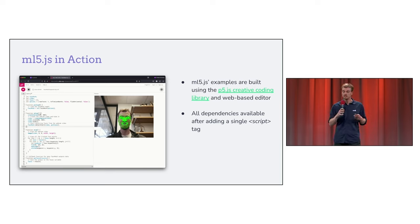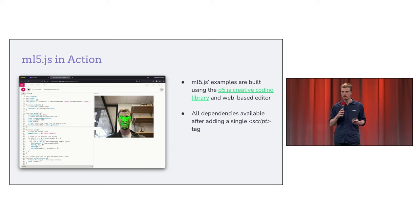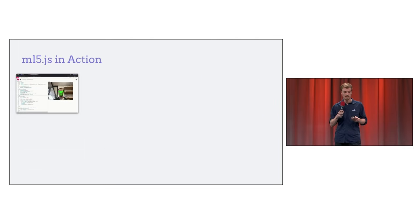ML5's examples are all built using P5.js and the P5 web-based editor, which means that all dependencies and model weights are available using a single script tag. In this example, you can see face key point detection — the model is instantiated, the webcam feed is grabbed, and the output of the model is visualized, all using about 35 lines of code. In practice, this allows students to very quickly get up and running and jump to creative use cases.